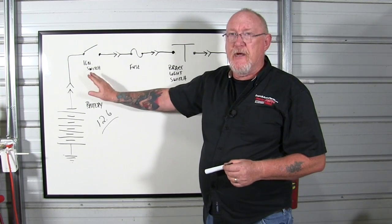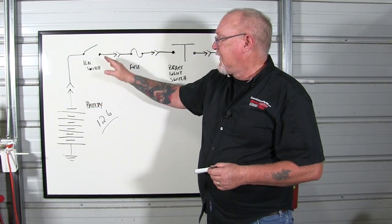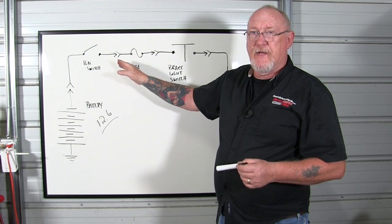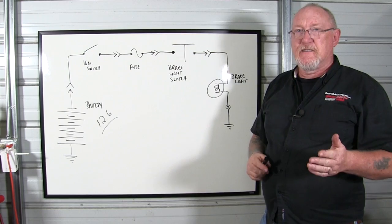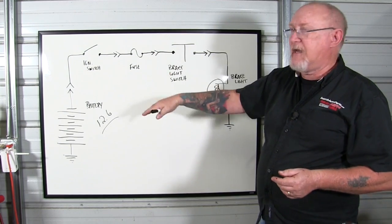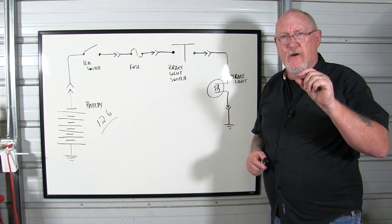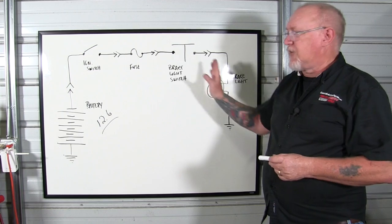Everything here has some measure of resistance. The connecting points have resistance. The control devices, whether it's the contacts inside the switch or whatever the case might be, they have resistance. Even the fuse has some resistance. And of course, the wiring that connects to everything has measurable resistance. But it's very, very, very small, almost insignificant when it comes to the operation of the circuit as a whole.